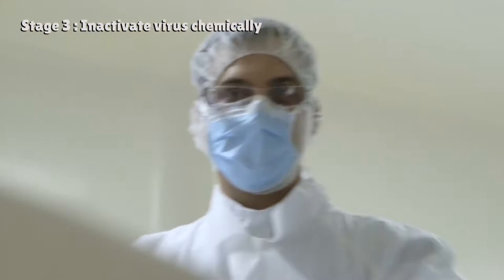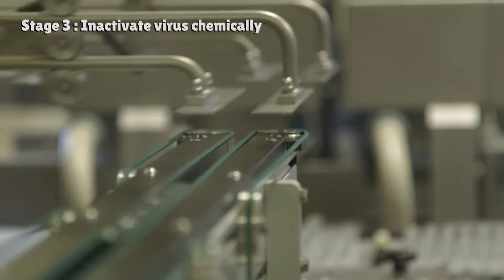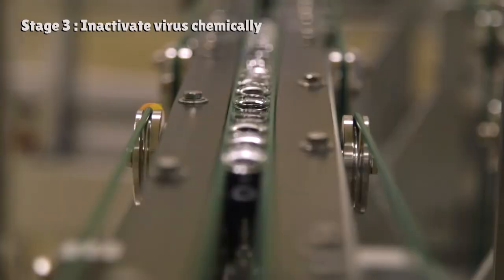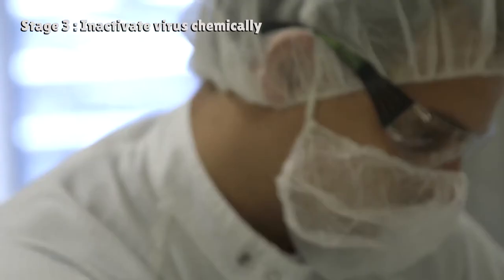In the next stage, purification of the virus from the allantoic fluid takes place. And they also split the virus into small particles and then inactivate it chemically, in order to prevent it from being able to further replicate.